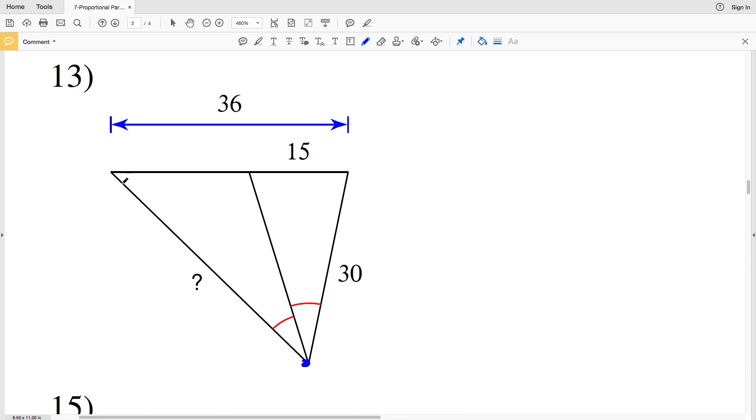Now knowing that, let's get started with number 13. We're missing this length, let's call this a. So we're solving for a. a over 30 is going to be proportional to this length, which is 36 minus 15. Since 36 is the total length and 15 is part of that total length, so 36 minus 15 is equal to 21. So a over 30 is proportional to 21 over 15.